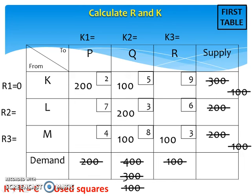For example, at this U square, we have 0 plus K1 equals 2, so we get K1 equals 2. At this U square, we have 0 plus K2 equals 5, so we get K2 equals 5.